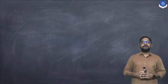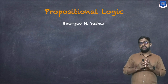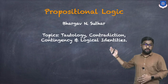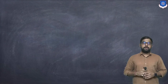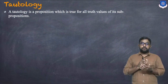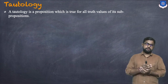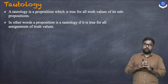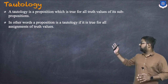Hey everyone, this is Paragav Sothar and today we are continuing with propositional logic. In today's session we will discuss tautology, contradiction, contingency, and logical identities. A tautology is a proposition which is true for all values of its sub-propositions — in other words, a proposition is a tautology if it is true for all assignments of truth values.